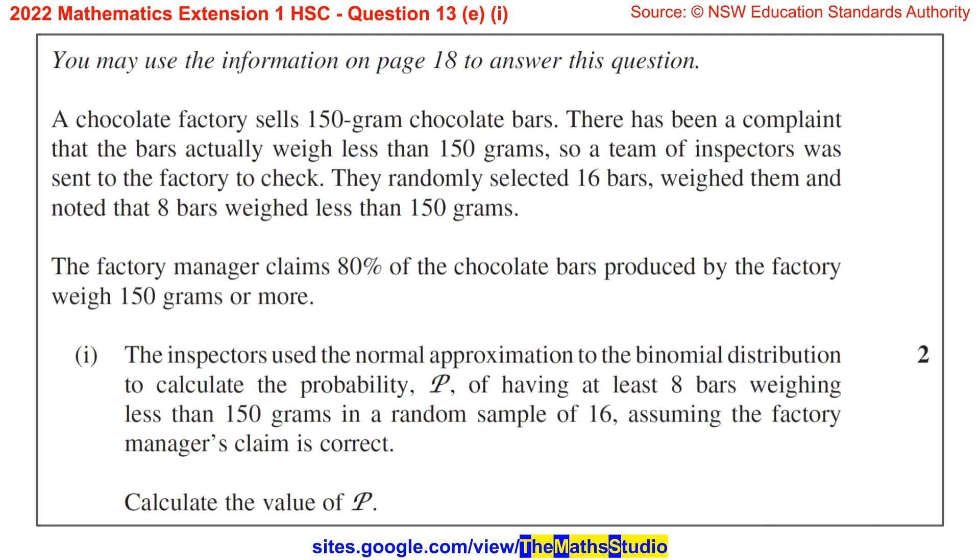Question 13e. You may use the information on page 18 to answer this question. A chocolate factory sells 150 gram chocolate bars. There has been a complaint that the bars actually weigh less than 150 grams, so a team of inspectors were sent to the factory to check.